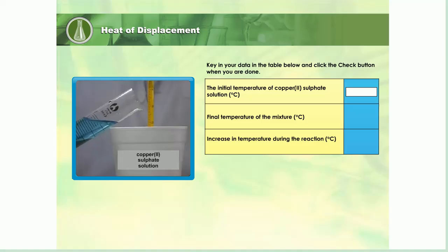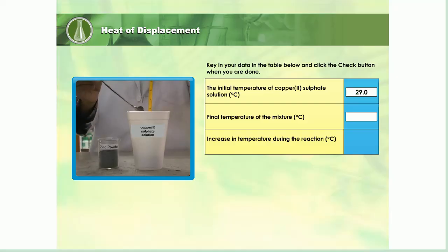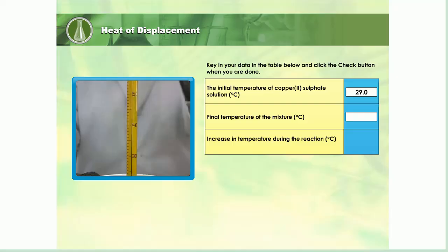50 cubic centimeters of 0.25 mol per cubic decimeter copper(II) sulfate solution is poured into a polystyrene cup. The initial temperature of the solution is measured with a thermometer. Record the reading in the table provided. Excess zinc powder is poured into the copper(II) sulfate solution. Stir the mixture and record the highest temperature of the mixture in the table provided.